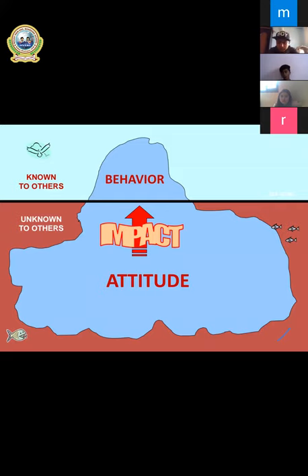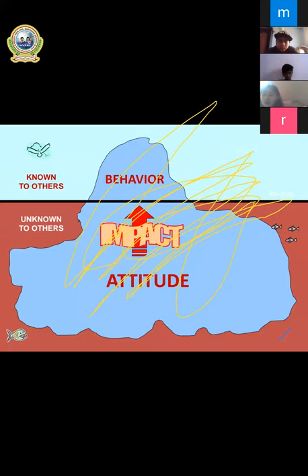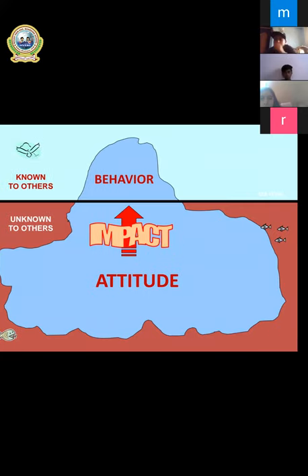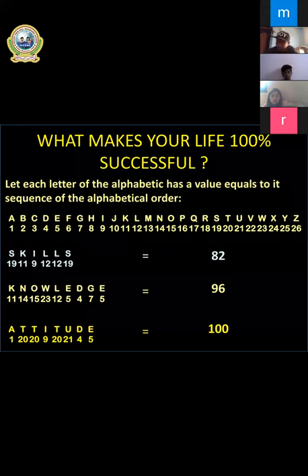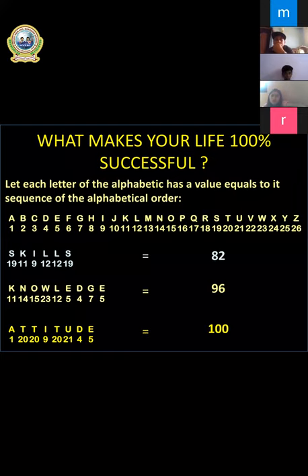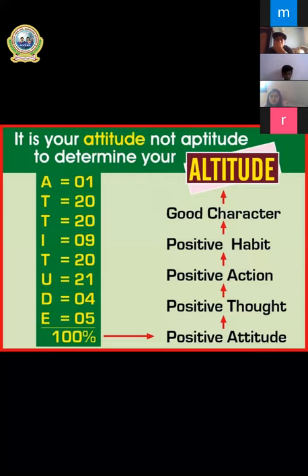If we assign each letter of the word 'attitude' a sequential number and sum them up, we find the total is 100. So if you really want to be 100% successful, what helps you is attitude. It is your attitude, not your skill only, that determines how high you go. If you really want to be a very successful person, you must have positive attitude.